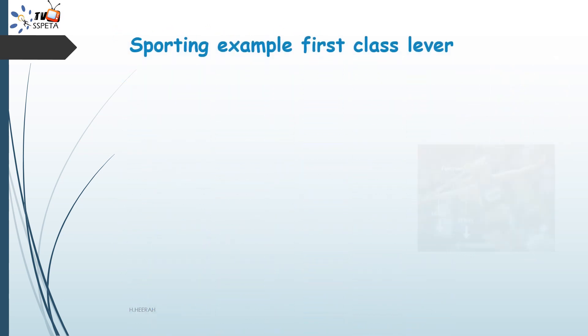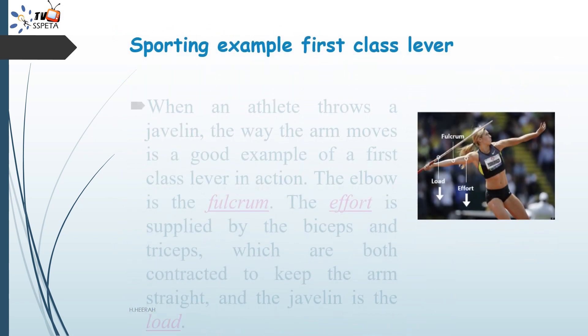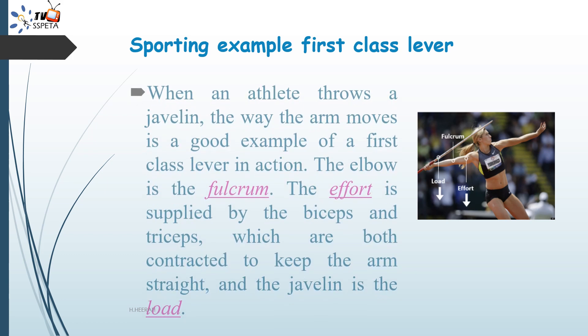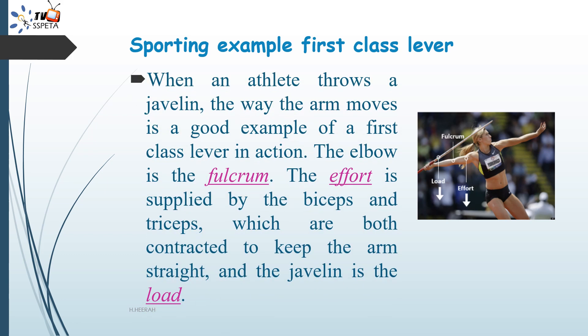A sporting example of a first class lever: when an athlete throws a javelin, the way the arm moves is a first class lever in action. The elbow is the fulcrum, the effort is supplied by the biceps and triceps — both contracted to keep the arm straight — and the javelin is the load.